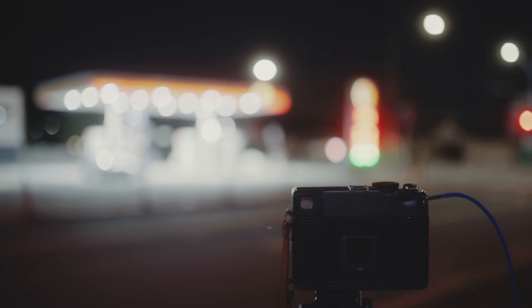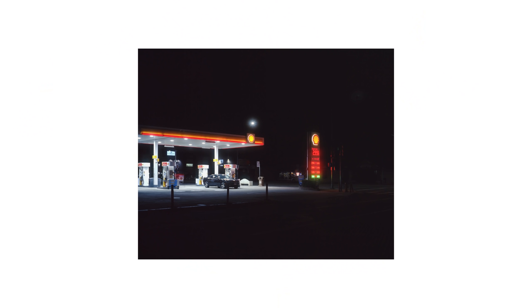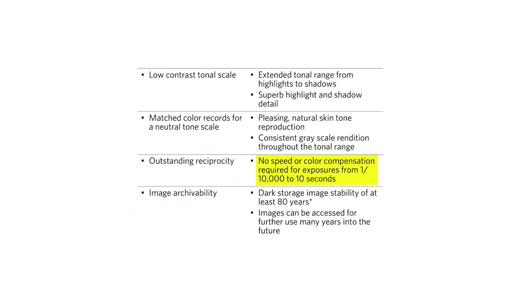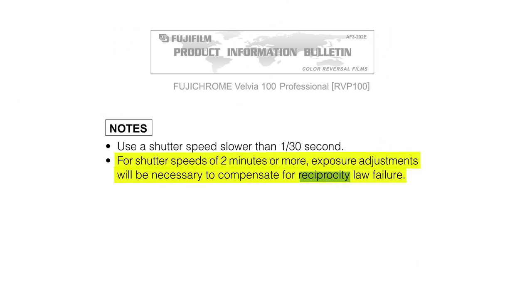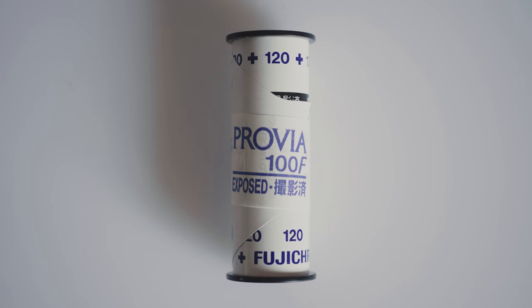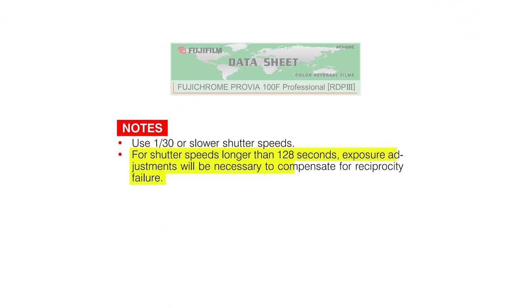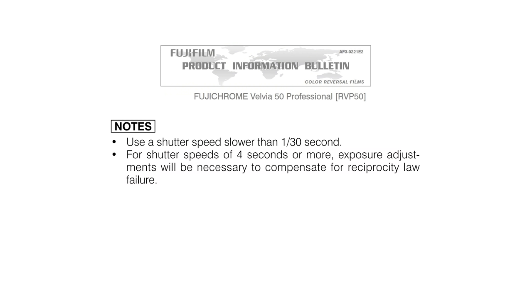The cool thing about color positive film is that it often has special reciprocity properties. For example, Kodak's new Ektachrome doesn't require you to correct for reciprocity until your shutter time exceeds 10 seconds — which is pretty easy for me to remember because that's more than this channel's average watch time. Velvia 100 doesn't actually require you to correct for reciprocity until your shutter is over two minutes long. Fuji Provia 100 doesn't require any adjustments until after 128 seconds, and Velvia 50 doesn't require anything until after four seconds, which is just pathetic.